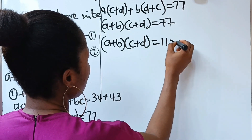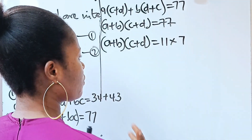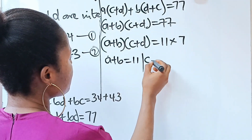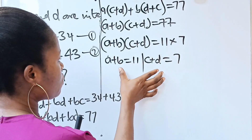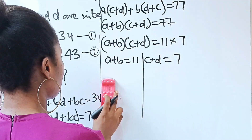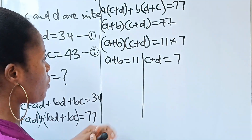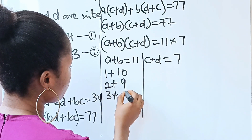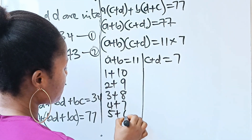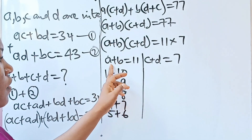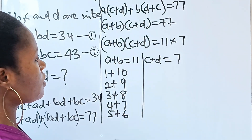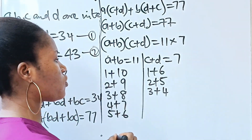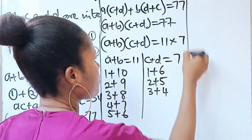So (a + b)(c + d) = 11 × 7 or 7 × 11. If a + b = 11 and c + d = 7, the possible integer values for a and b are: 1+10, 2+9, 3+8, 4+7, 5+6. For c and d: 1+6, 2+5, 3+4, and so on.